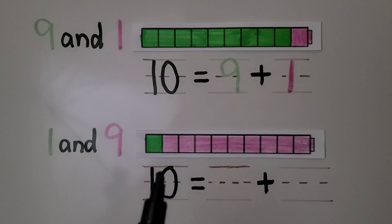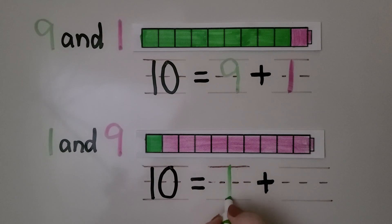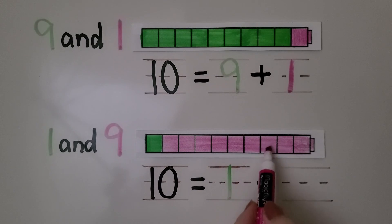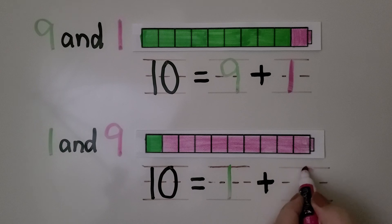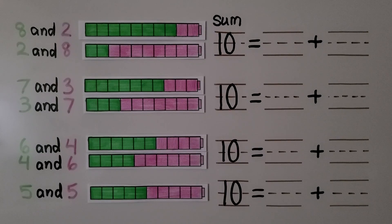We can also write it with one green cube and nine pink cubes. We write one for the green cube and count the pink cubes: one, two, three, four, five, six, seven, eight, nine. We write nine for the nine pink cubes. Ten is equal to one plus nine. Nine and one is a number pair equal to ten. We can write the addition equation as ten equals nine plus one, or ten equals one plus nine.